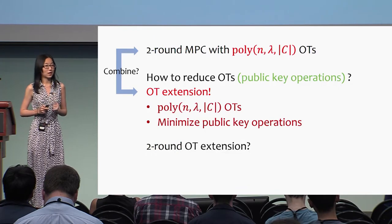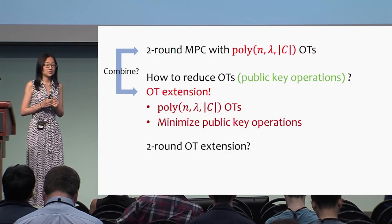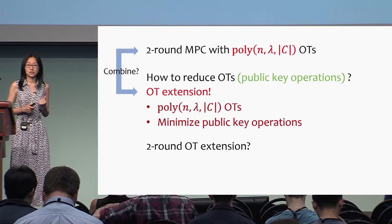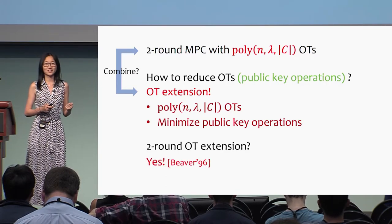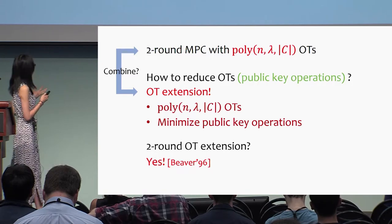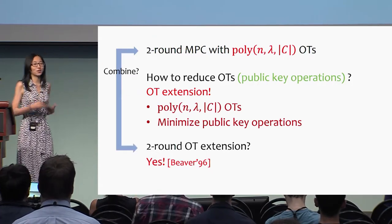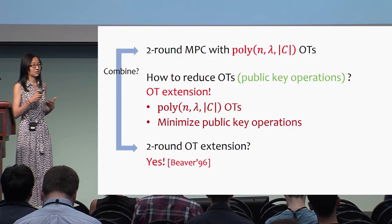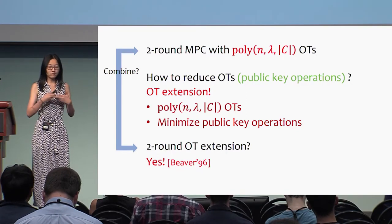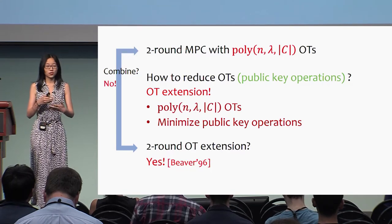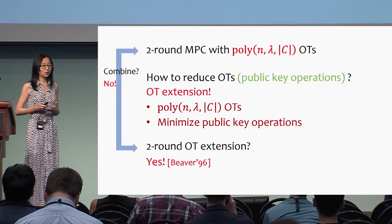Since we still want a two-round protocol, is there a two-round OT extension? The answer is yes — Beaver's OT extension is two-round. This seems even more perfect. Can we just combine two-round MPC with two-round OT extension to minimize the public key operations? Unfortunately, the answer is no. Trivially combining these two primitives doesn't work.